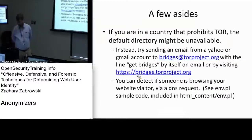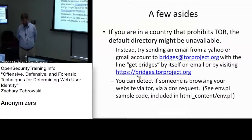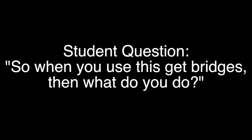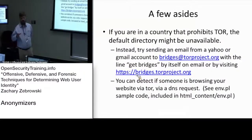If you are in a country that prohibits TOR, you can send an email to bridges@torproject.org from either a Yahoo or a Gmail account. That's another way of bypassing the people that are trying to filter you. Then you configure the TOR client to use that particular bridge information.